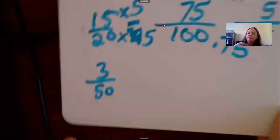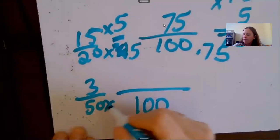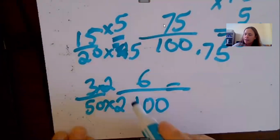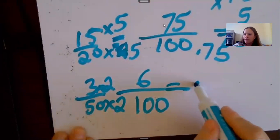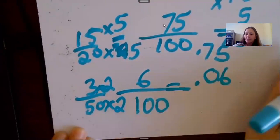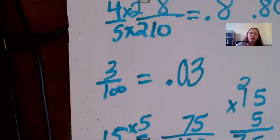And the last one, 3 fiftieths, that could have 100 on the bottom. 50 times 2 is 100, 3 times 2 is 6. Again, it's 6 hundredths, not 6 tenths. So 6 hundredths looks like this, not 0.6, that's 6 tenths. So let's see which one of these go with the answer.